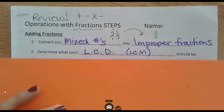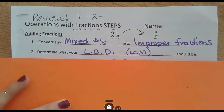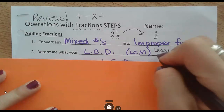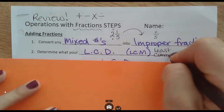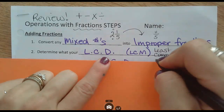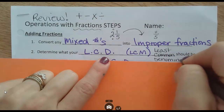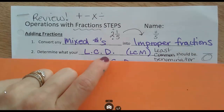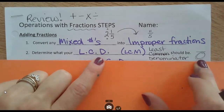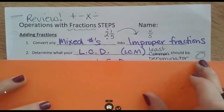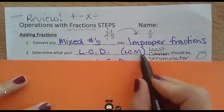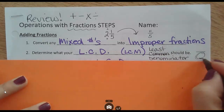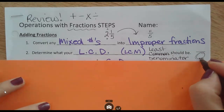Step 2: determine your LCD — Least Common Denominator. On the bottom of a fraction, what would you need in the denominator so that they match before you add or subtract? If you remember LCM, Least Common Multiple, the LCD is the same idea — finding the LCM for the bottoms of your fractions.